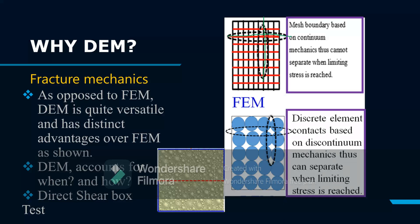But in DEM — the top one is FEM, this is the DEM — when the limiting stresses are reached, the contact models provide for complete separation and complete detachment, so you are able to see your fracture.